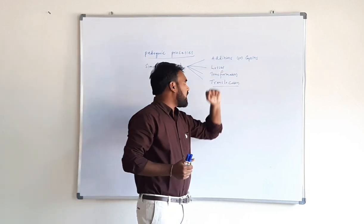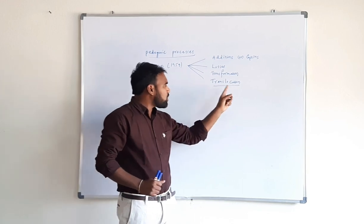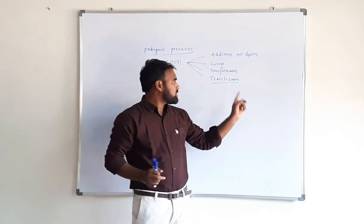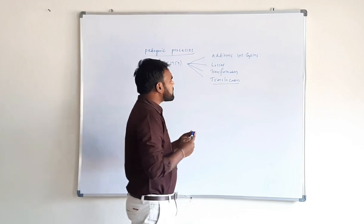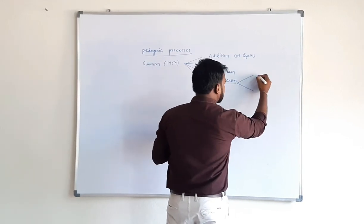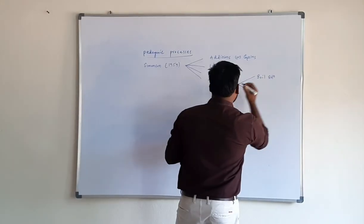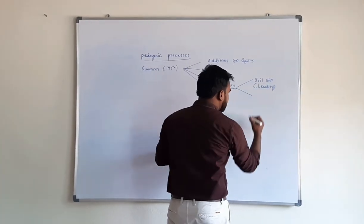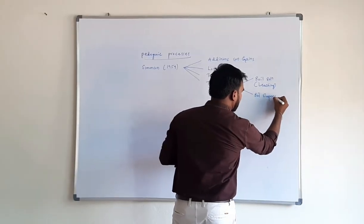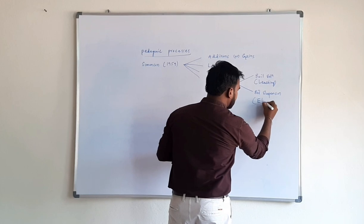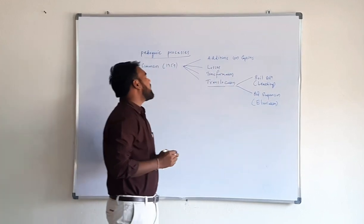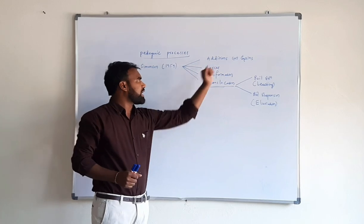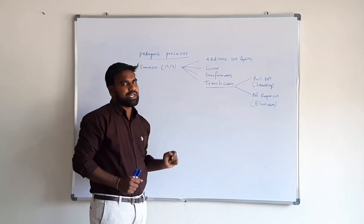The fourth process, translocation, is the movement of soil material from one place to another place within the soil. Translocation is of two types: first, in soil solution, which is known as leaching; and second, in soil suspension, which is known as eluviation. These are the basic pedogenic processes according to Simonson 1959.